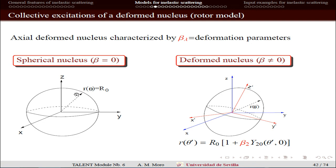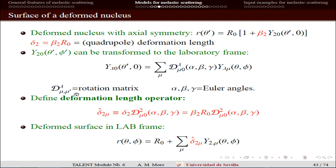The shape of the surface is easily written in the intrinsic frame. For a pure quadrupole deformation with axial symmetry, the radius depends on θ′ and can be written as R₀[1 + β₂Y₂₀(θ′)]. The quantity β₂·R₀ appears many times and is defined as the deformation length δ. β₂ is a dimensionless parameter, and δ has dimensions of length.